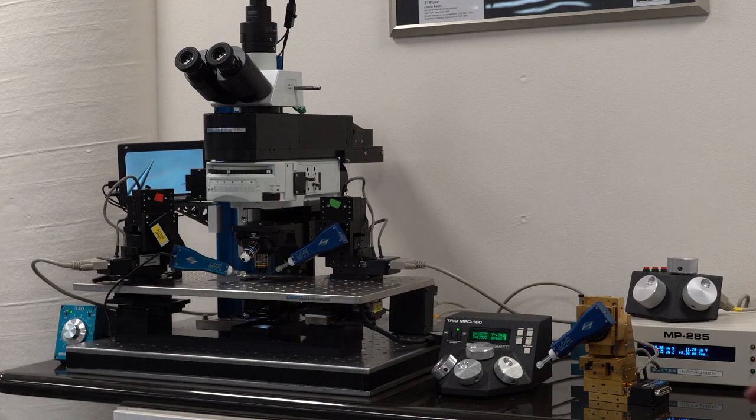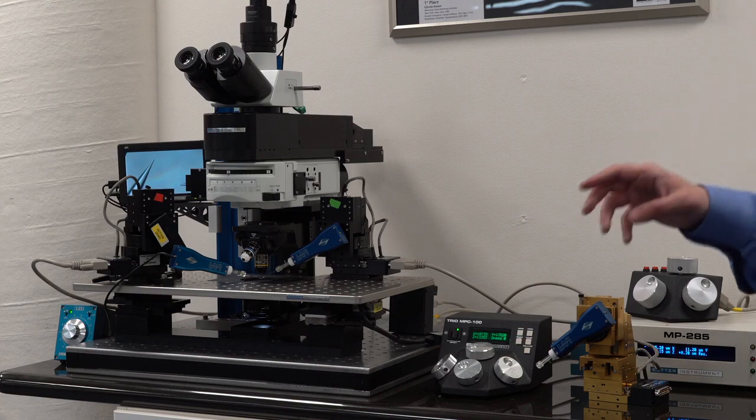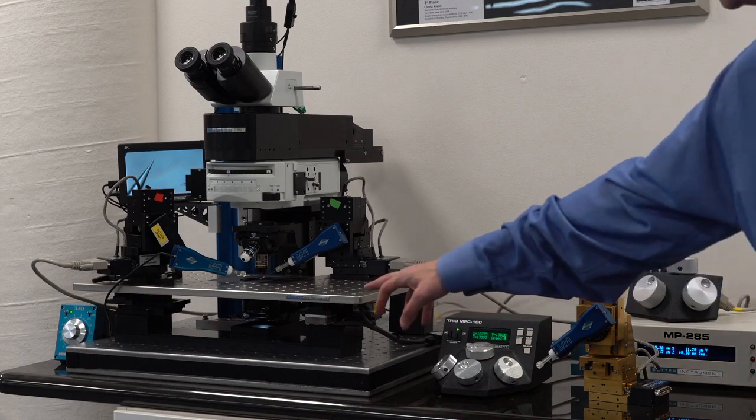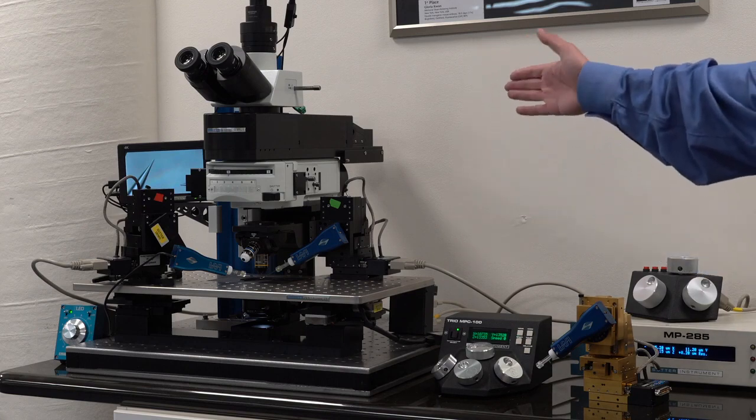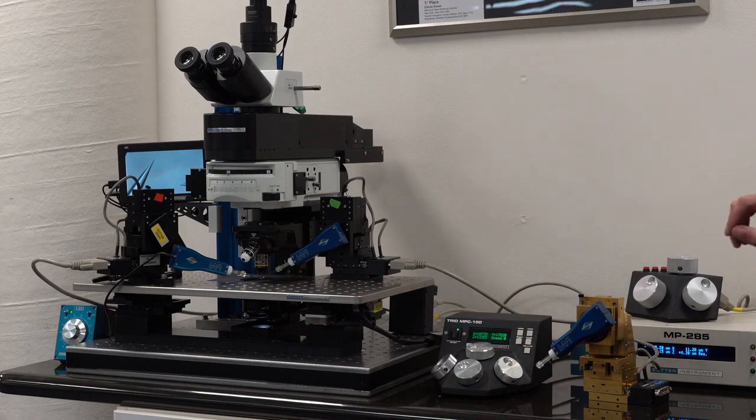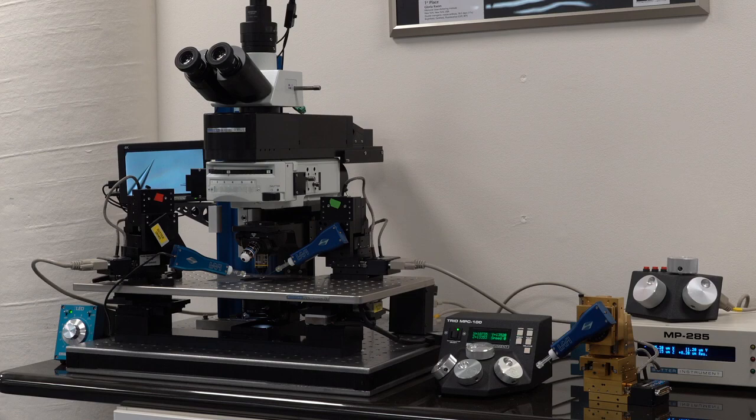So in this setup, again, because this is a 2P microscope, the 2P Bob, we have it on a motorized stage. So the stage moves because of the laser, the microscope stands still. The stage and the Z focus is controlled by our newest 285 which we call the 285A. But in this case, I wanted to show you the MPC-100.